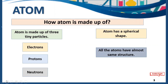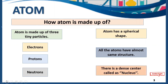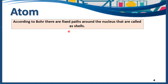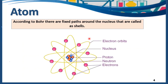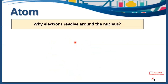Atoms all differ in the number of shells and in the number of electrons, but the structure of the atom is almost the same. There is a dense center inside an atom that is named the nucleus. According to Bohr, there are fixed paths around the nucleus, and those fixed paths are called shells. Here you can see these fixed parts or orbitals in which electrons are revolving — they are named as shells or energy levels.